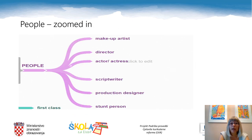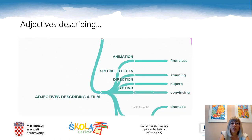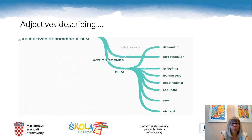People involved are makeup artist, director, actor or actress, script writer, production designer and stunt person. We have come to adjectives describing a film and we can say that the film has first-class animation, stunning special effects, superb direction and convincing or spectacular acting. We can also say that it has gripping, dramatic or exciting action scenes and describe a film as humorous, fascinating, realistic, sad or violent.